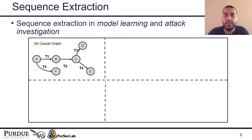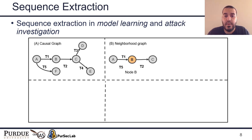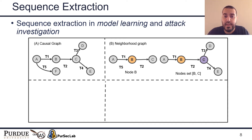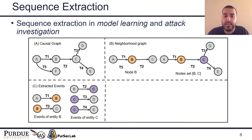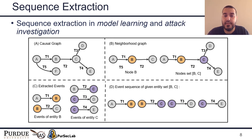In the sequence extraction component, sequences are simply temporally ordered events extracted from a causal graph representing the audit logs. Given a causal graph, ATLAS extracts a neighborhood graph for one entity or a set of entities, including the node entity and neighborhood nodes along with their edges. Next, ATLAS extracts all events represented as nodes and edges in the neighborhood graph as an initial step to form sequences. In the last step, ATLAS orders the extracted events according to their timestamp to construct a temporal sequence of events, which are later used to learn and identify attack patterns and recover the attack story.